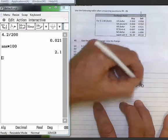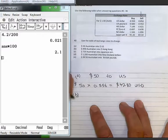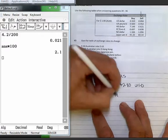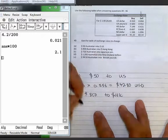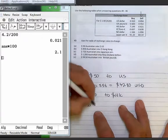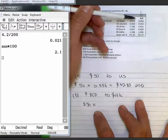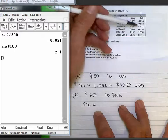In part B, 850 Australian to Hong Kong dollars. So 850 times the sell figure, which is going to be 6.621.